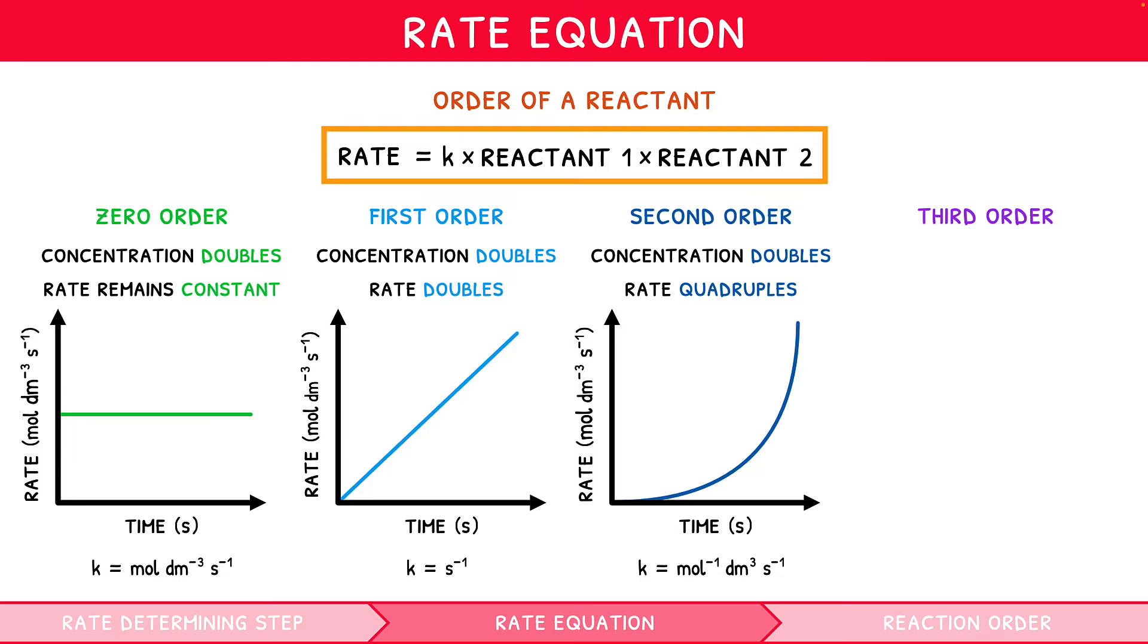For a third order reactant, if its concentration were doubled, the reaction rate would increase by eightfold, i.e. they are cubically related. These do not come up much, so don't focus on them. Although, the units here would be mole to the minus two decimetres to the sixth per second to the minus one.